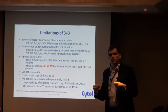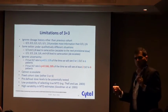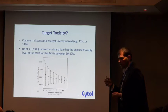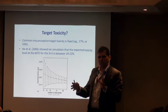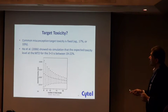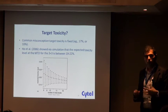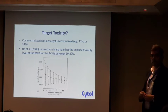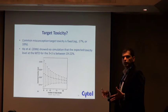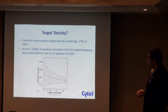When people use the 3+3 design, the terms one out of three and one out of six toxicities come to mind, creating a false sense that the target toxicity level is either 17% or 33% — which is not true at all. A simulation study has shown that the expected toxicity level at the MTD when using the 3+3 design is somewhere between 19% and 22%, and this is something you can now recreate yourselves pretty easily.